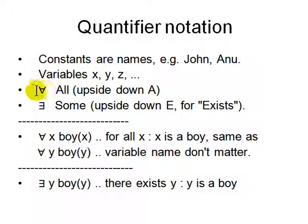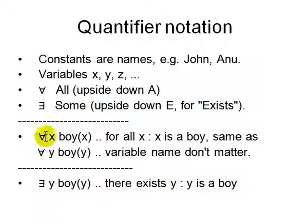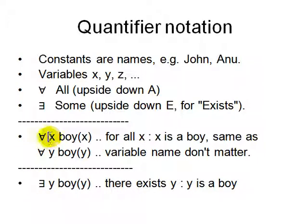We need to talk about quantifier symbols. An upside-down A means 'For all,' and an upside-down E means 'There exists.' Why are these used? Because before computers we didn't have enough fonts — they just reused the A and the E and placed them upside down, and it became 'all' and 'there exists.' So the way you write it is: For all X, Boy(X) — that means every X is a boy. And similarly, There exists a Y such that Y is a boy — that means there is somebody who is a boy. For all X, if there is any X that is a boy, it could be an empty set also.